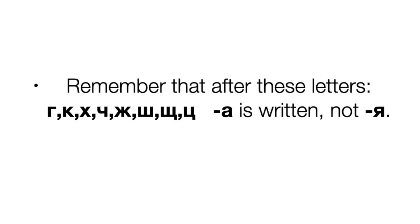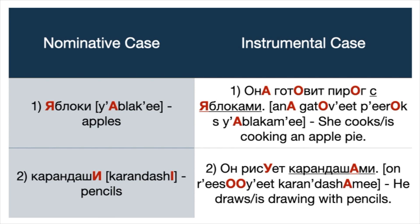Remember that after the letters г, к, х, ч, ж, ш, щ, ц — А is written, not Я. For example: яблоки — apples → яблоками. Example: Она готовит пирог с яблоками — She cooks an apple pie. Карандаши — pencils → карандашами. Example: Он рисует карандашами — He draws with pencils.